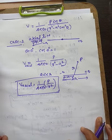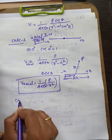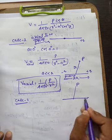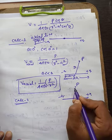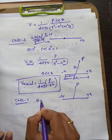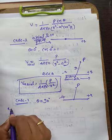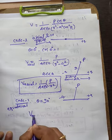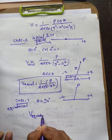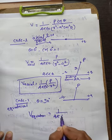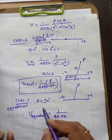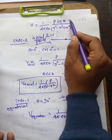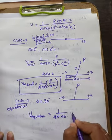Case 2: the equatorial line. The equatorial line is perpendicular to the dipole, so theta equals 90 degrees. Therefore cos 90° = 0. Substituting into V = (1/4πε₀)(P·cosθ)/(R² − a²·cos²θ), cos 90° = 0, so the numerator becomes zero. Therefore V_equatorial equals 0 — the potential at a point on the equatorial line of a dipole is zero.